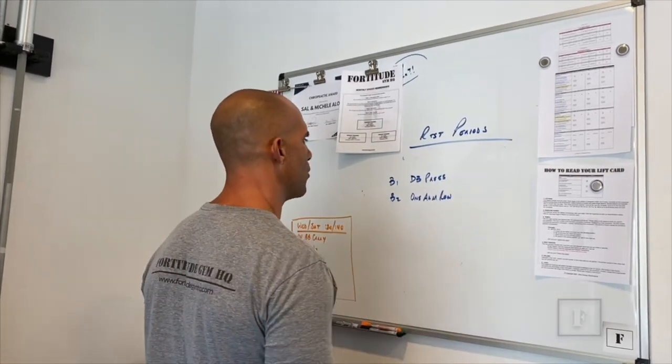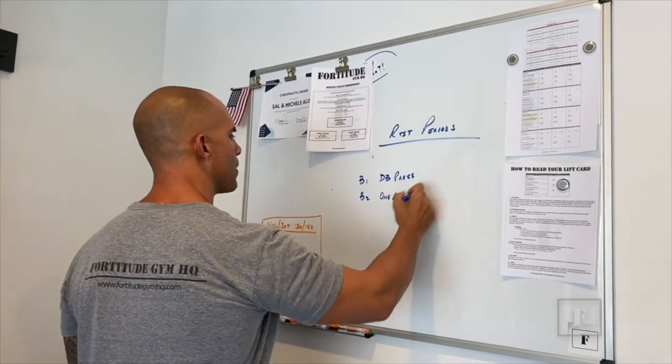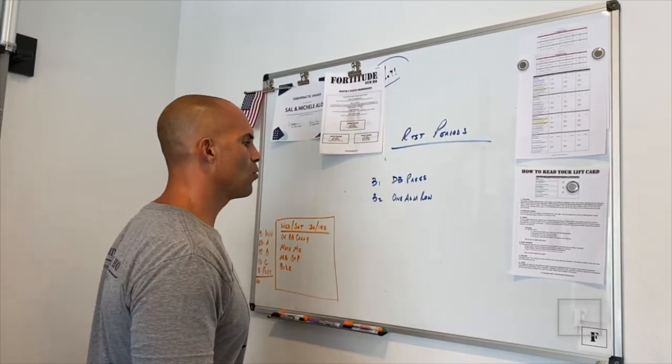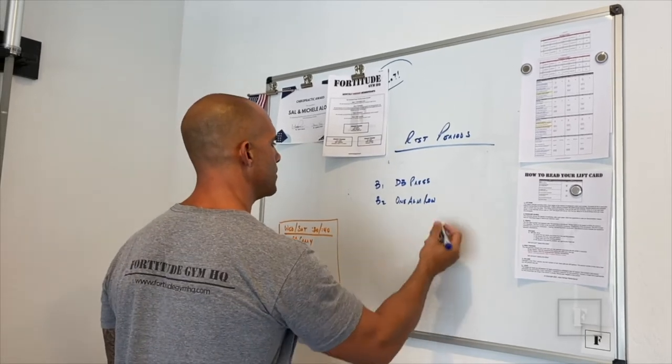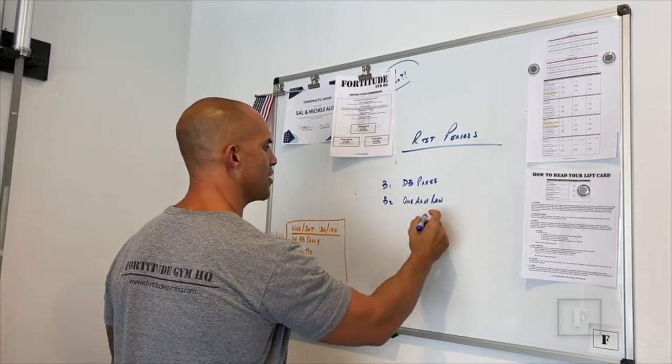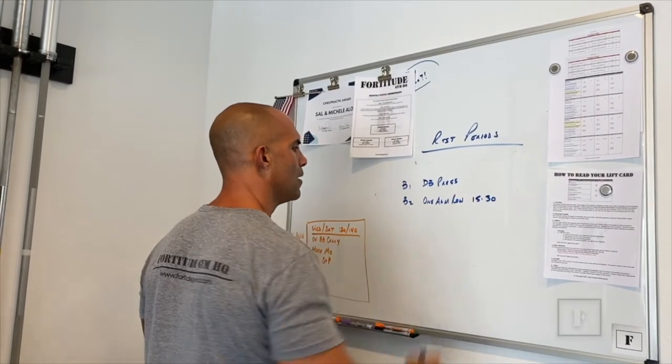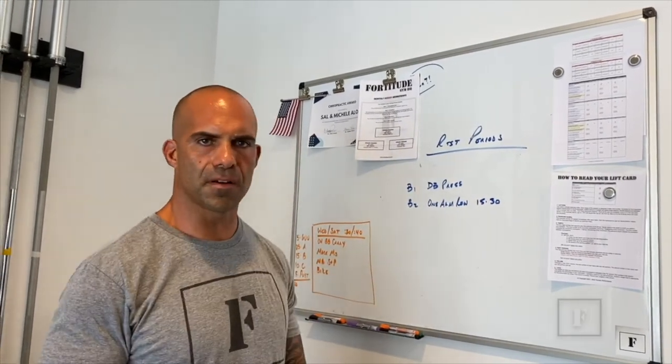We're gonna perform the press. We're gonna rest the designated time, and then we're gonna do the one arm row. A general rule with the one arm row, or our single limb movement, is anywhere from 15 to 30 seconds between limbs.